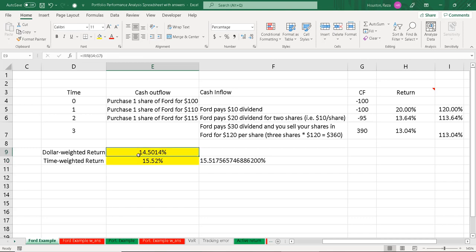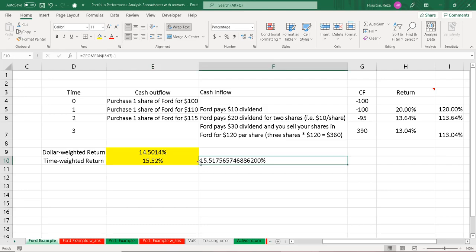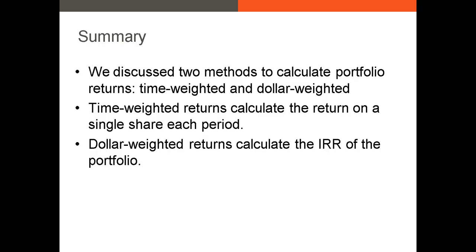Once you have both returns, this is the point where you'd compare your portfolio or stock to another portfolio or a benchmark. If the benchmark is the S&P 500, you'd want to see whether your portfolio outperformed or underperformed it. To summarize: we discussed two methods to calculate portfolio returns — time-weighted and dollar-weighted. Time-weighted returns calculate the return on a single share for each period, while dollar-weighted returns use the IRR function. The dollar-weighted return formula is also sometimes called the money-weighted return formula.